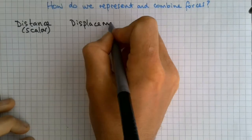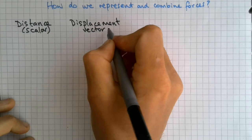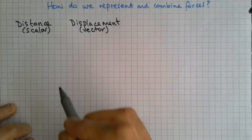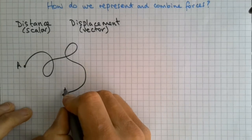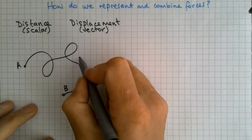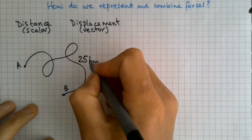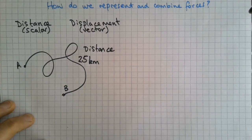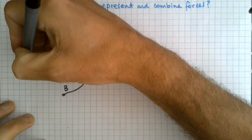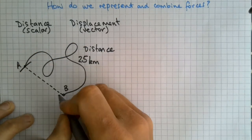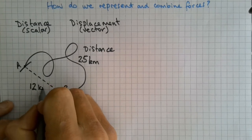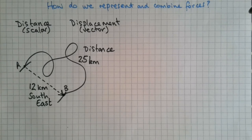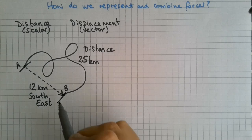Displacement is a vector, but it's really similar to distance. It just has a direction as well. For example, if I start at position A, do some journey to B, I could have traveled a distance of 25 kilometers. The displacement, the vector version, just looks at the distance from A to B, which might be less, say 12 kilometers. So we have a magnitude of 12 kilometers and a direction, which is southeast, given by this arrow.